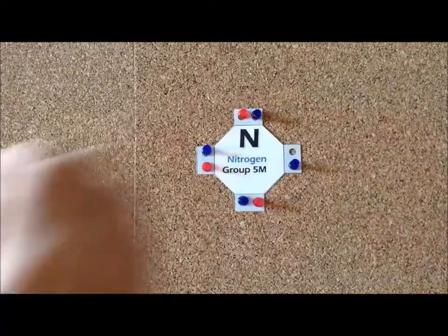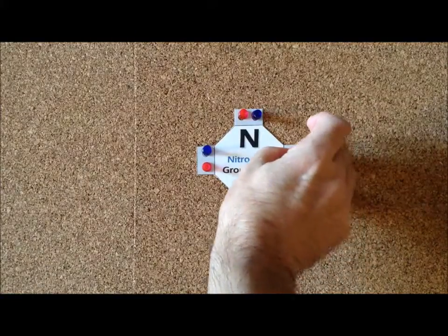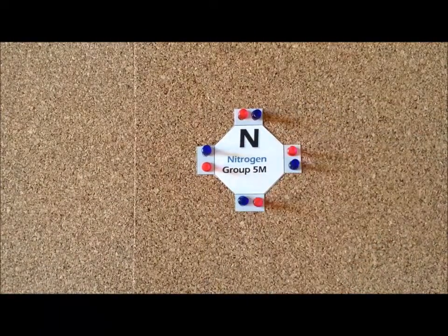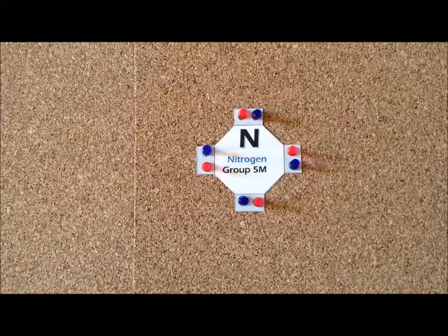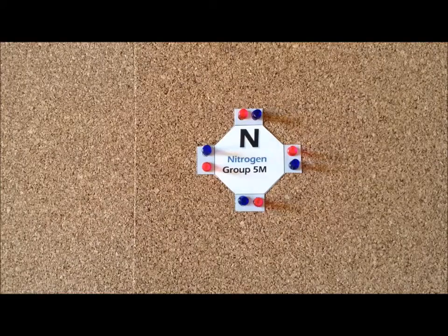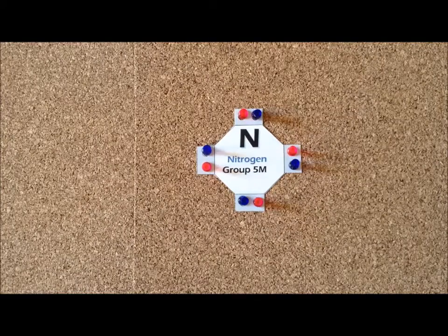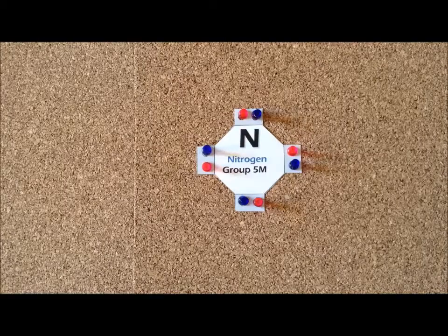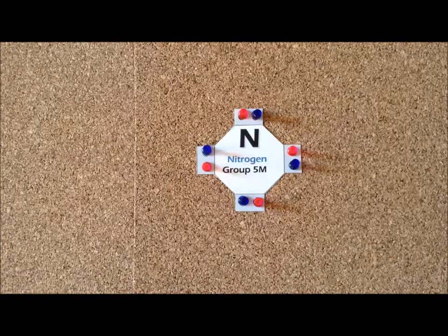We notice that if we are able to accomplish this, that now nitrogen has a complete octet. So we would predict that if it's capable of formation, the nitride ion would be stable because it satisfies the octet rule.